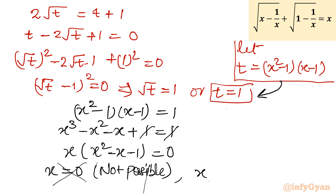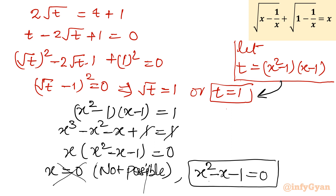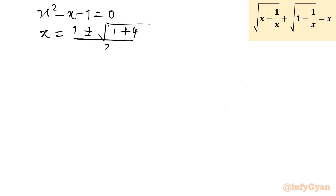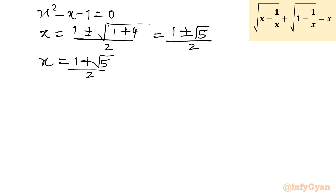The second factor gives the quadratic x² - x - 1 = 0. Let us solve this quickly using the quadratic formula: x = (-b ± √(b² - 4ac)) / 2a, which gives x = (1 ± √5) / 2. So x is either (1 + √5)/2 or (1 - √5)/2. Because we squared twice, extraneous solutions may be present.